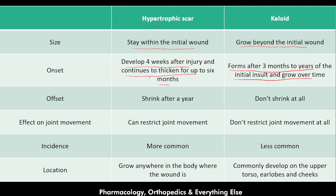Regarding offset: the hypertrophic scar shrinks after a year, while the keloid does not shrink at all. Regarding joint movement: the hypertrophic scar restricts joint movement, while the keloid does not. Regarding incidence: the hypertrophic scar is more common, while the keloid is less common. Regarding location: the hypertrophic scar grows anywhere the wound is, while the keloid commonly develops on the upper torso, earlobes, and cheeks.